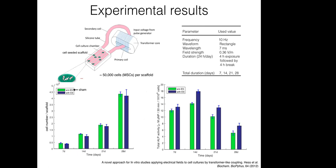From these experiments we obtain the total number of cells and the total ALP signal. The total number of cells shows growth both with and without stimulation. The total ALP signal in the cell population shows an initial growth and then falls down — there is a decay.